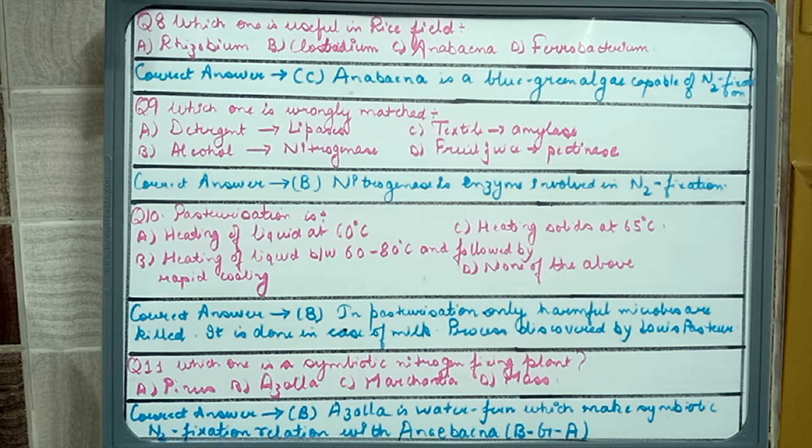Question 11: which one is a symbiotic nitrogen fixing plant? Pinus, Azolla, Marchantia, or moss. The answer would be Azolla. Azolla is also known as water fern which makes symbiotic nitrogen relationship with Anabaena that is a blue green algae which we have already discussed in question 8. So the symbiotic nitrogen fixing plant is Azolla which is called water fern and it makes symbiotic relationship with blue green algae Anabaena.